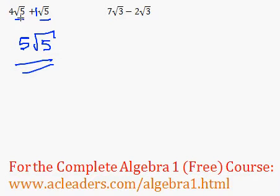All we have to do if we have the same radical being added or subtracted is combine the numbers. So in this case we're adding, so 4 plus 1 is just 5 times root 5.